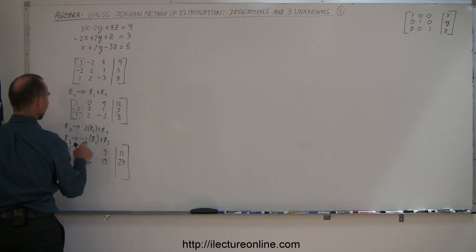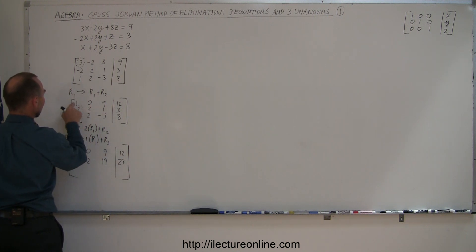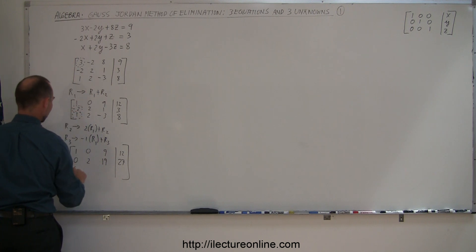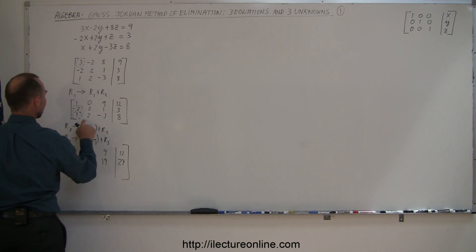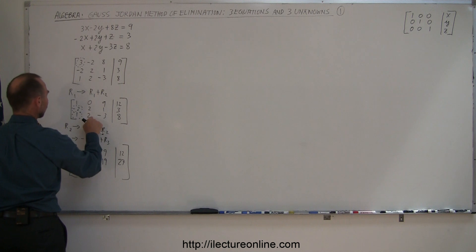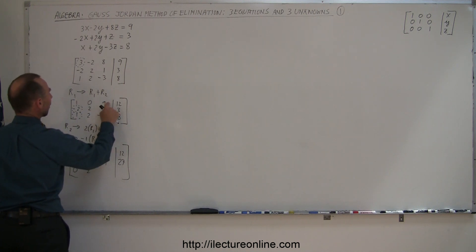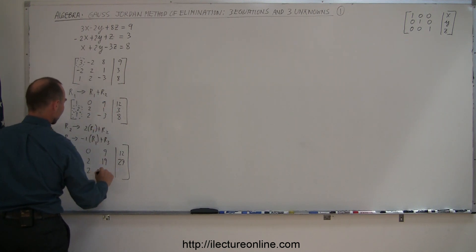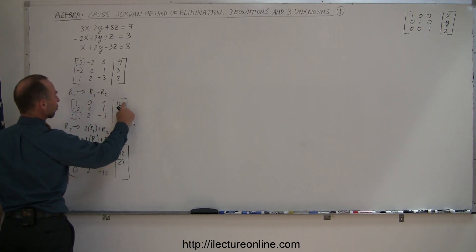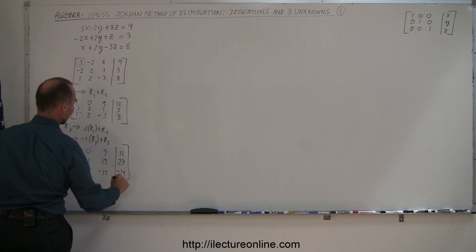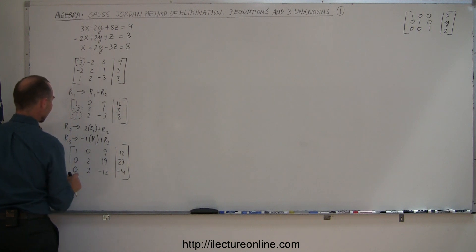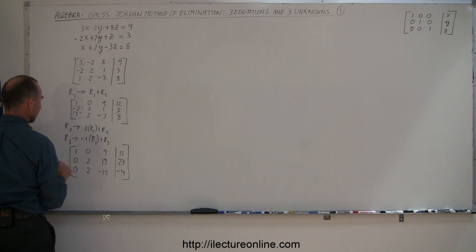For row three: negative one times one added to one gives zero; negative one times zero added to two gives two; negative one times nine is negative nine, added to negative three gives minus twelve; and negative one times twelve is negative twelve, added to eight gives negative four. So now I've gotten a zero in row two column one and a zero in row three column one.